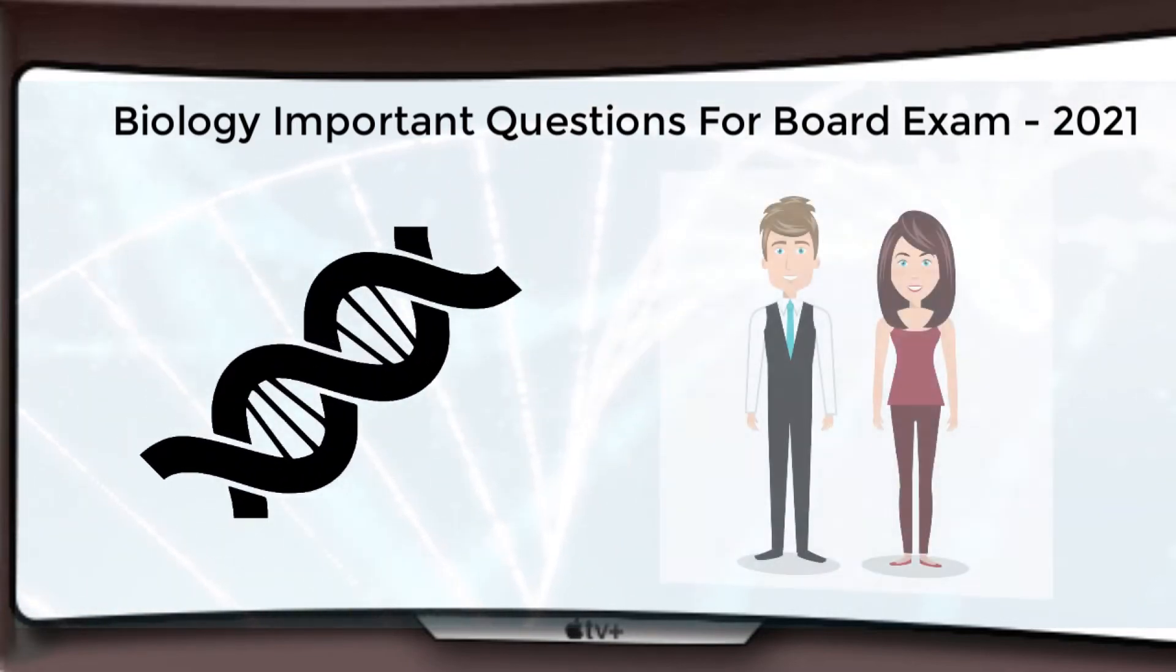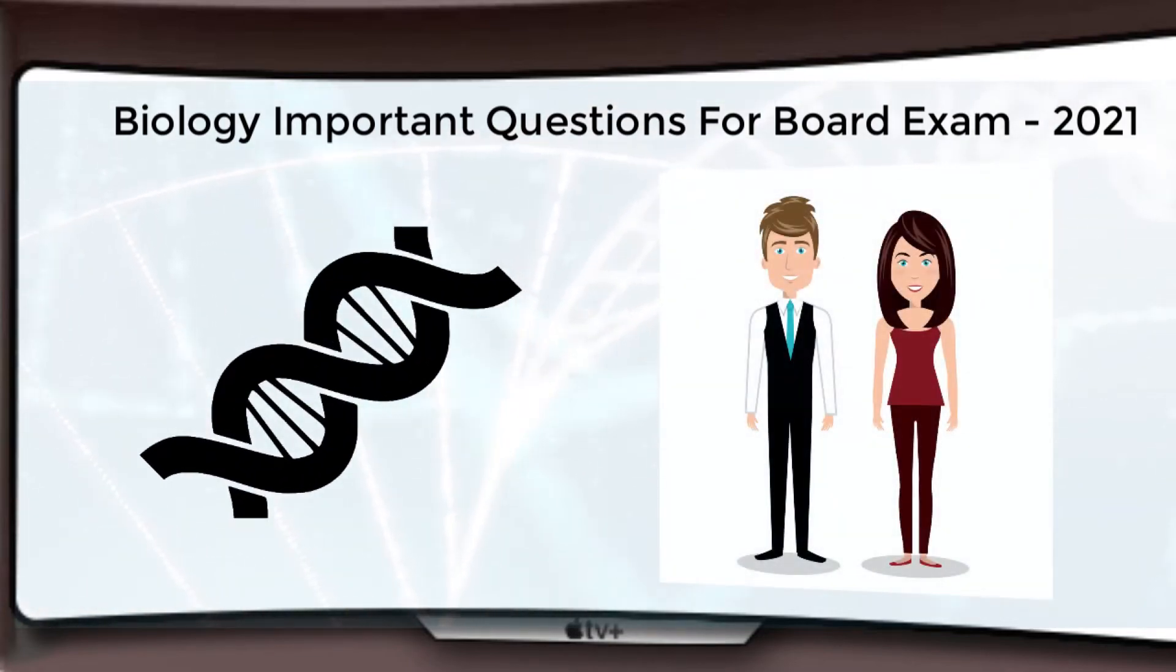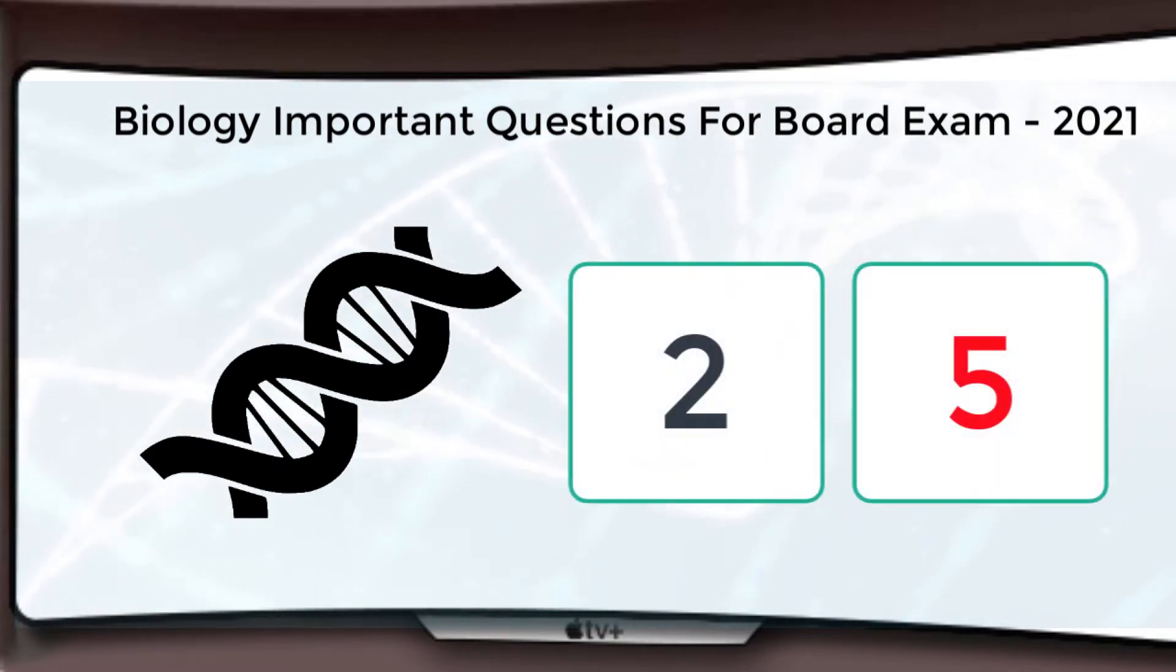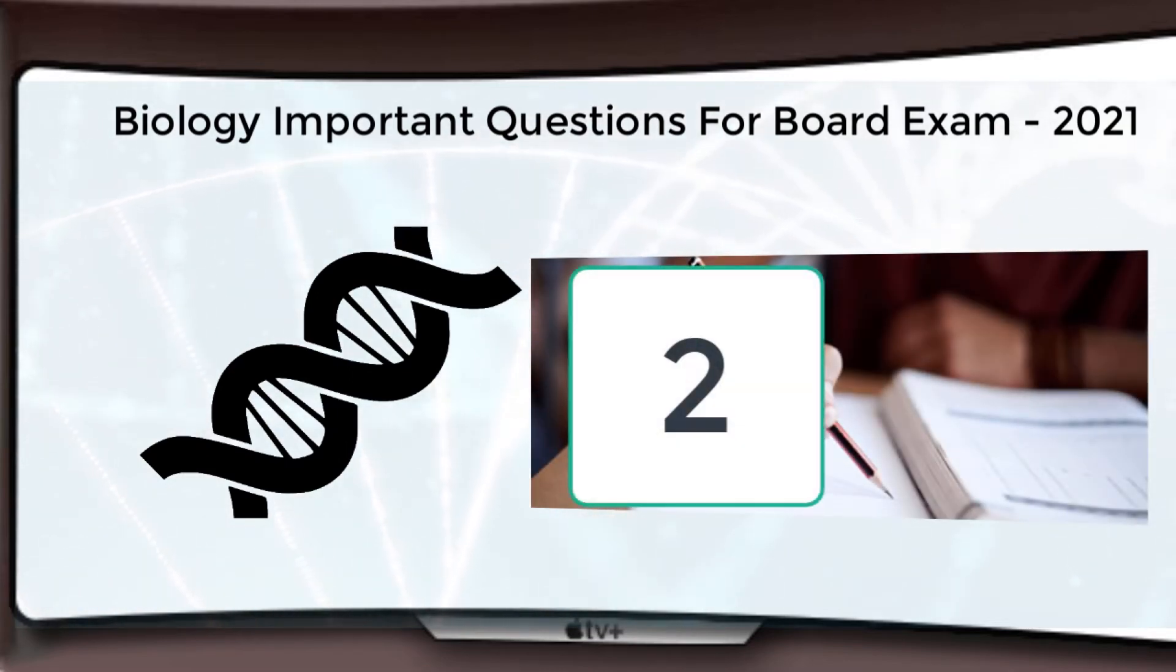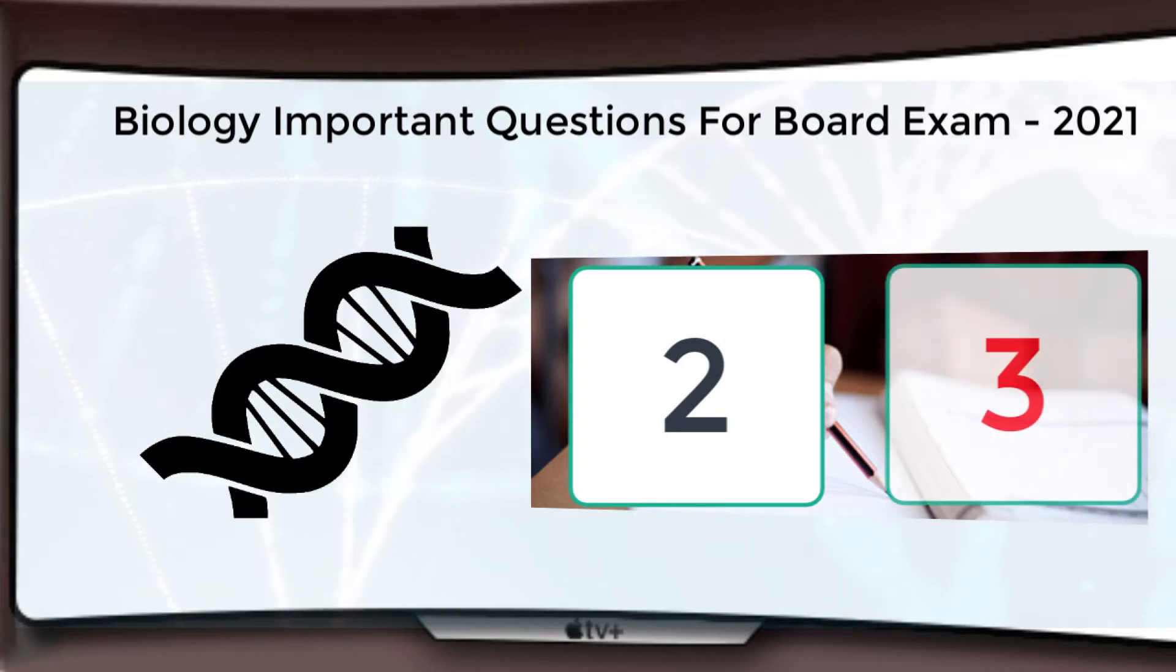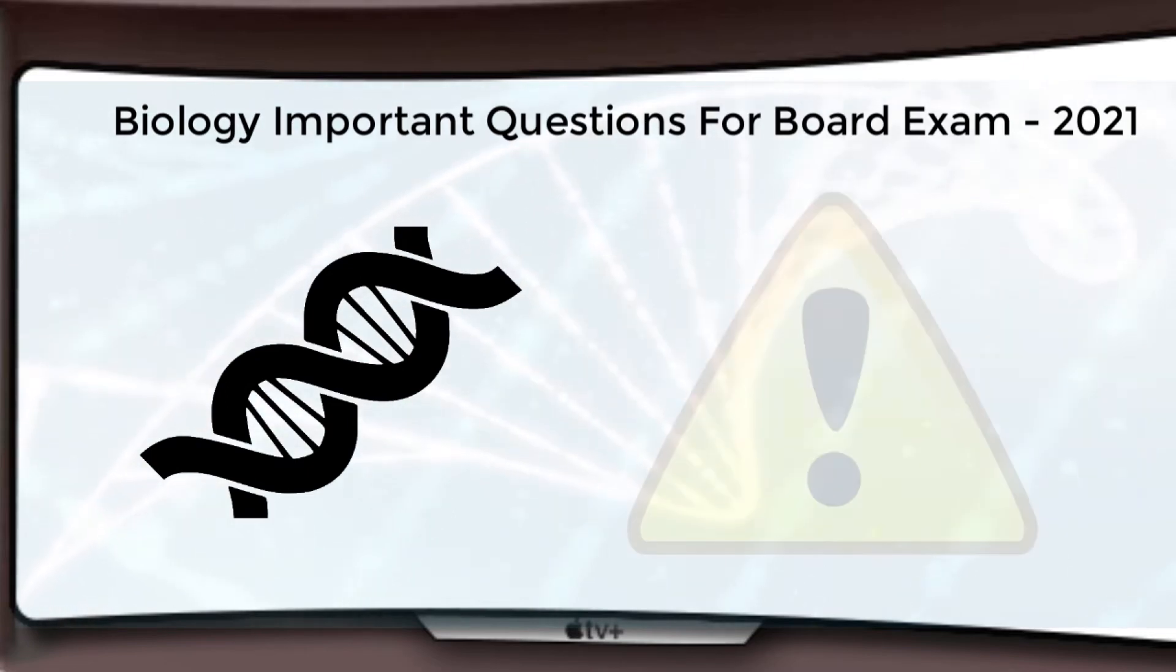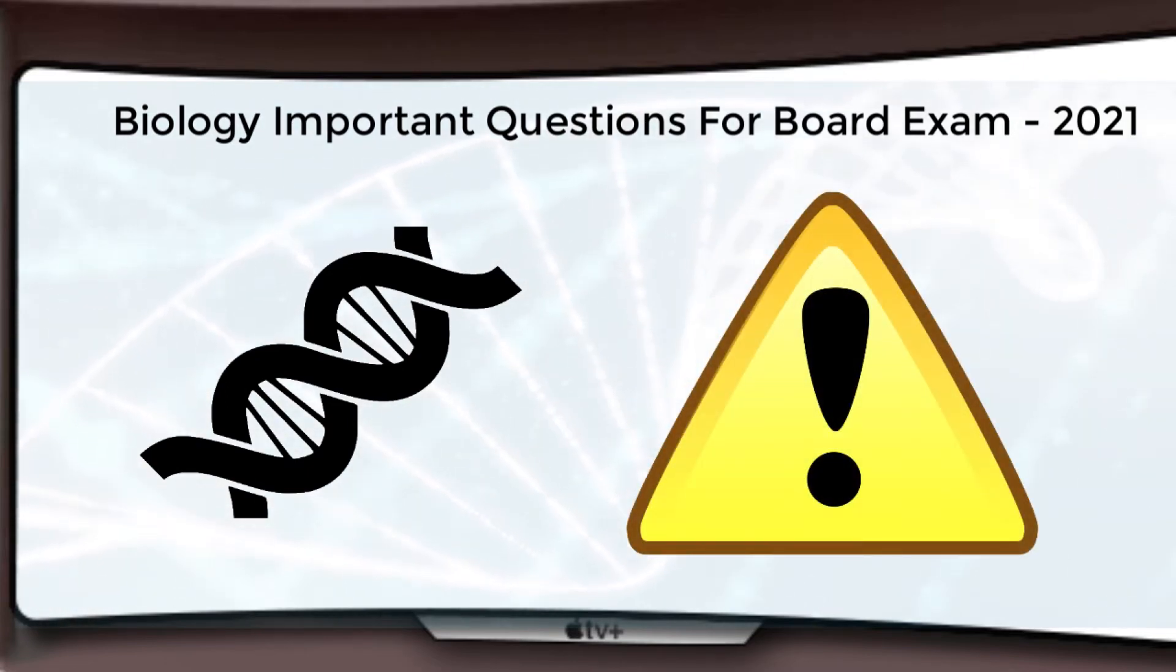The first one is Principle of Inheritance and Variation. Now in Principle of Inheritance and Variations, we mostly get questions of two marks and five marks. If I talk about previous five years' papers, we always get a question of two marks from this chapter and also sometimes three marks and five marks. Definitely we will get one question from this.